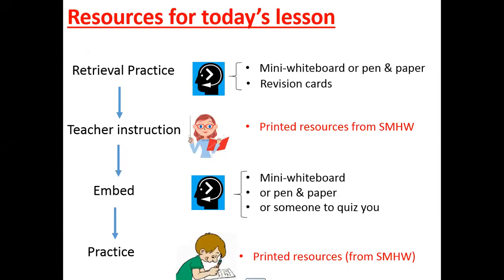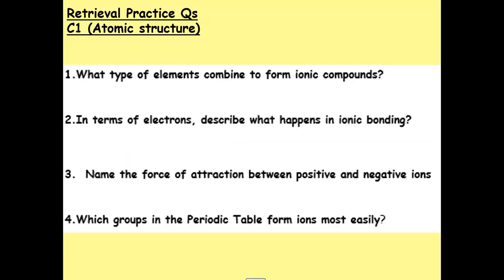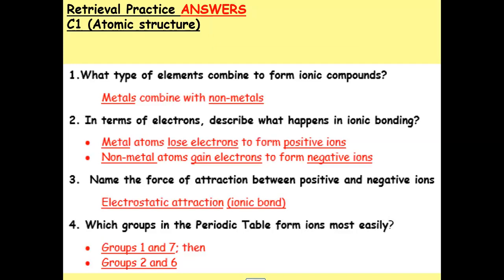We'll use the same lesson format as normal. We'll start with some retrieval practice and make sure you've got all your resources together. The retrieval practice is here — this is C1 Atomic Structure. Pause and retrieve. These are the answers to those questions. If you need to make any revision cards, pause and revise.